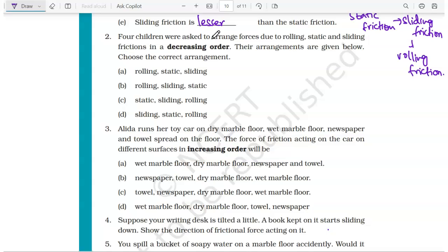Four children were asked to arrange forces due to rolling, static, and sliding friction in decreasing order. Their arrangements are given below. Now you know maximum is static, then sliding, then rolling. So correct answer is 2C.